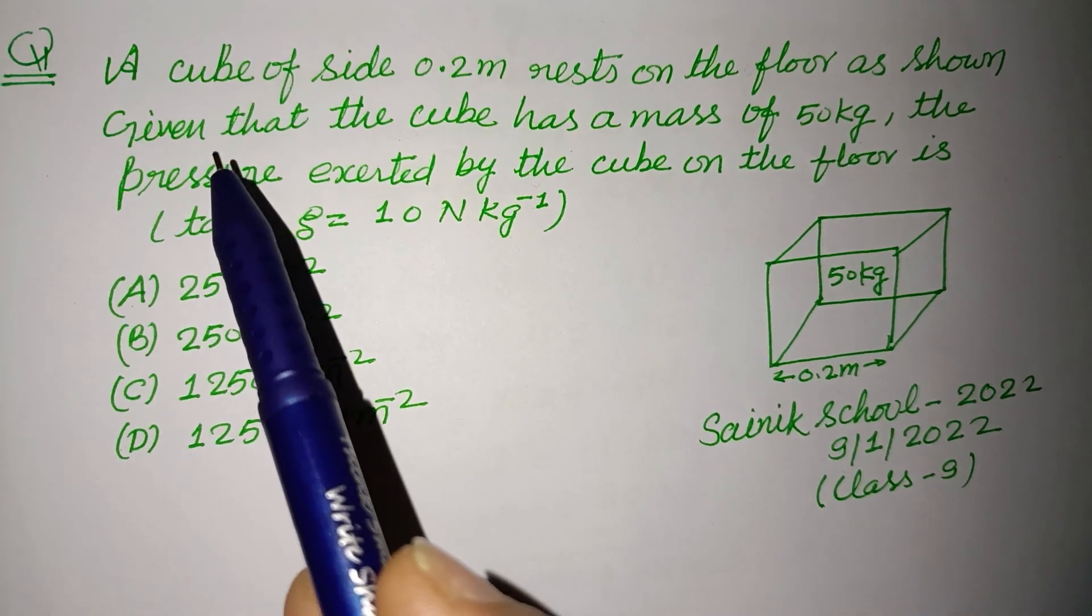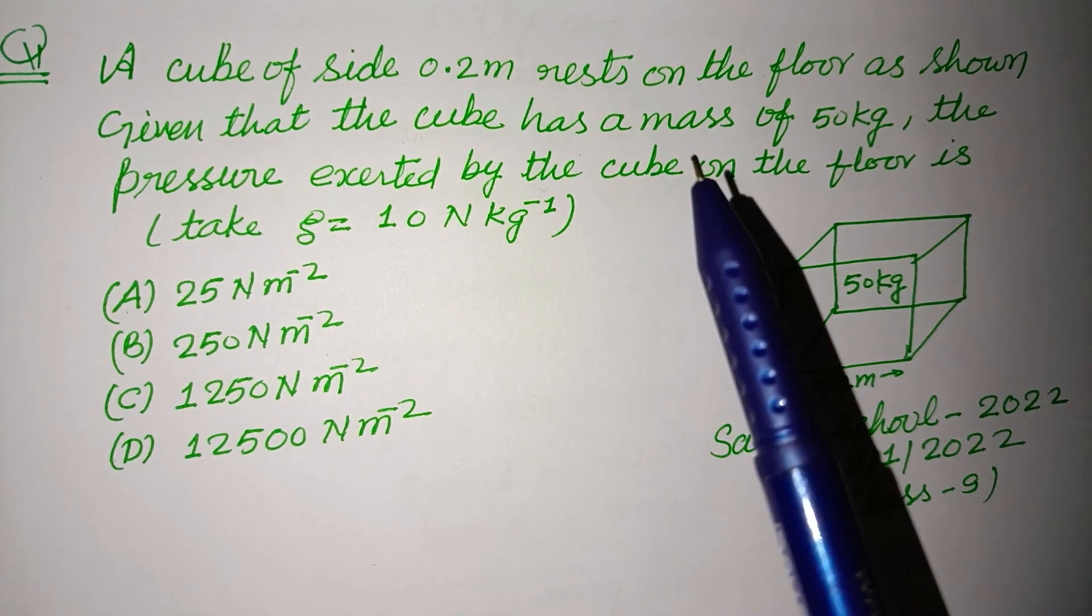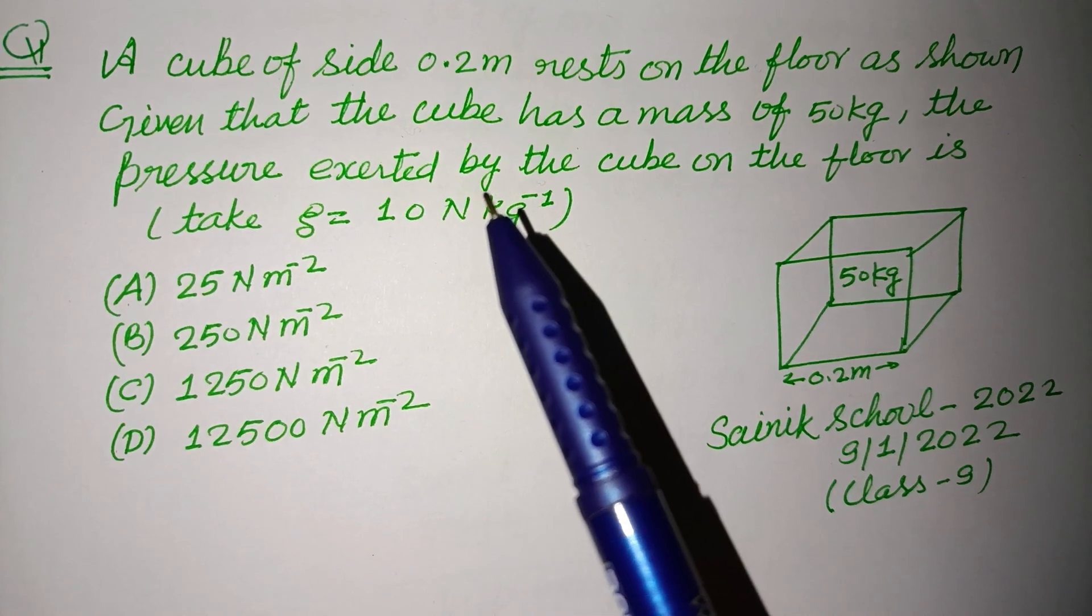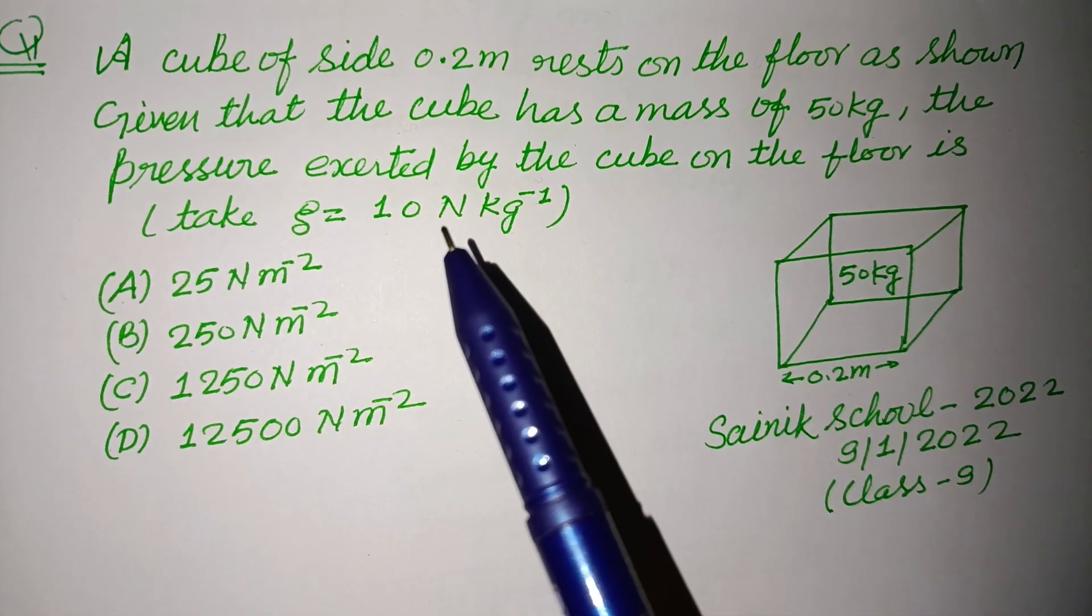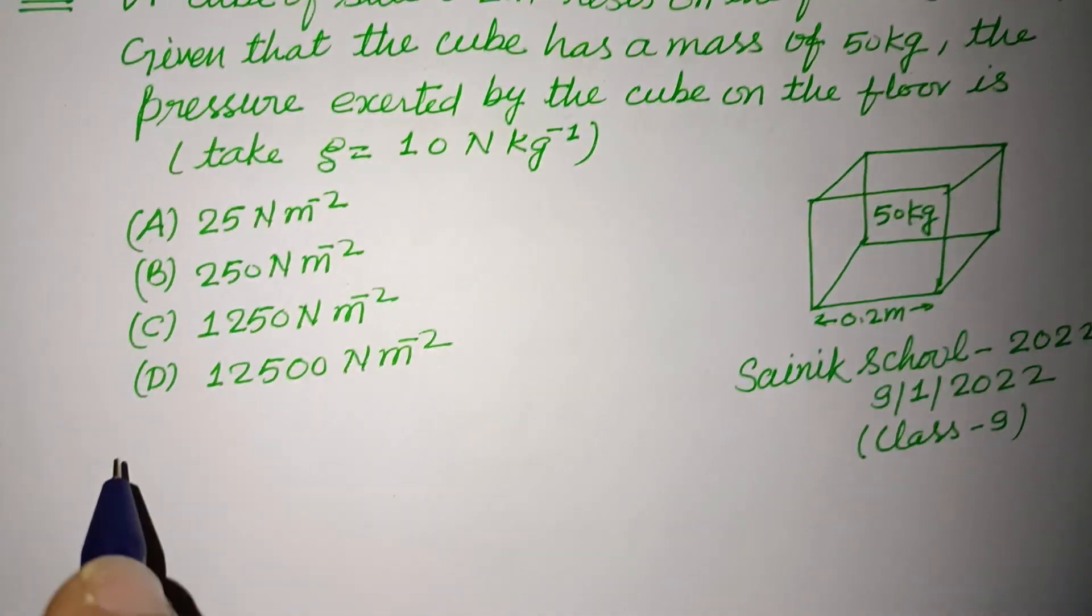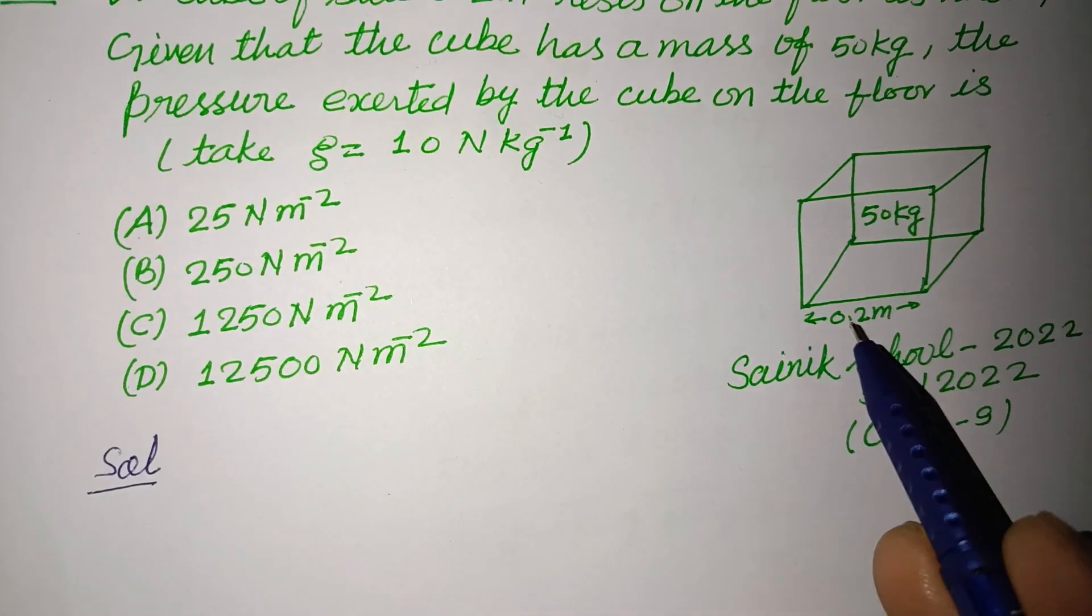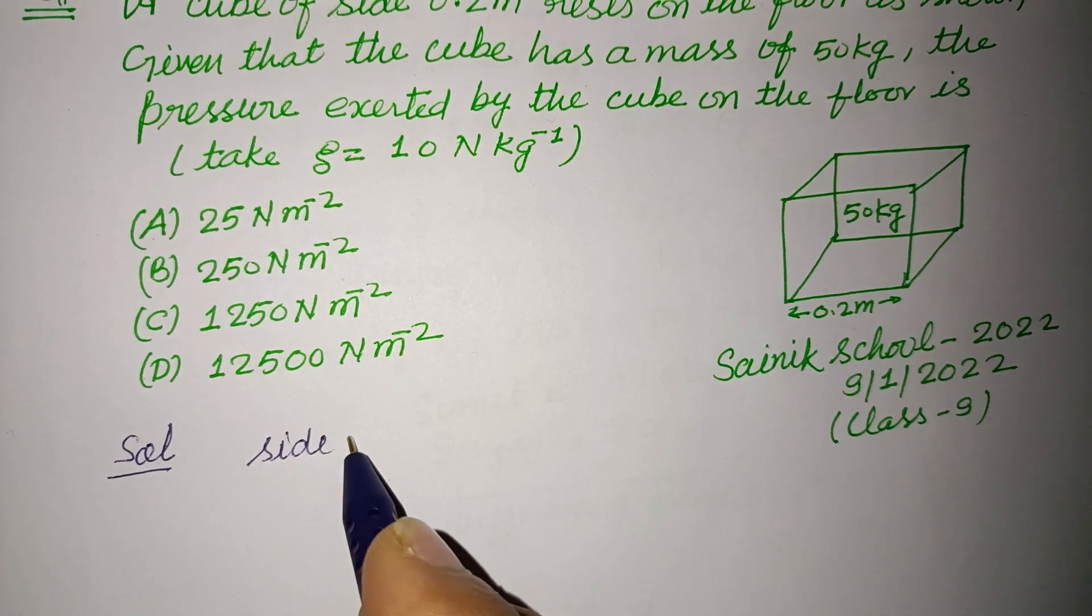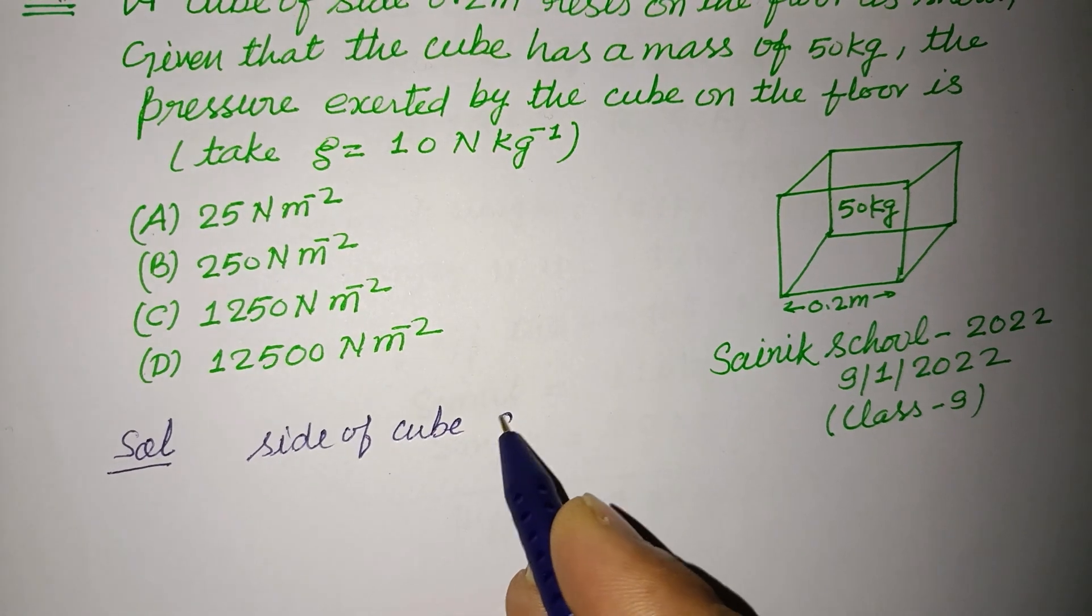A cube of side 0.2 meters rests on the floor as shown. Given that the cube has a mass of 50 kilograms, find the pressure exerted by the cube on the floor. So students, here the side of the cube, a, is given to us as 0.2 meters.